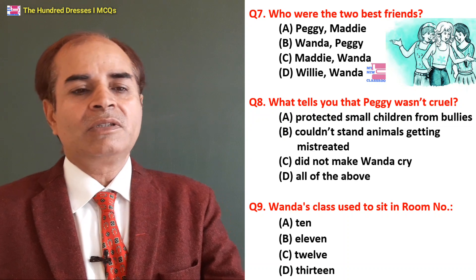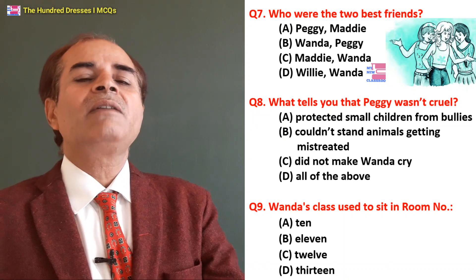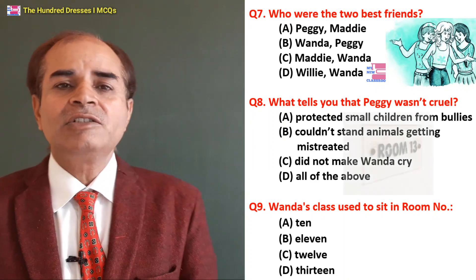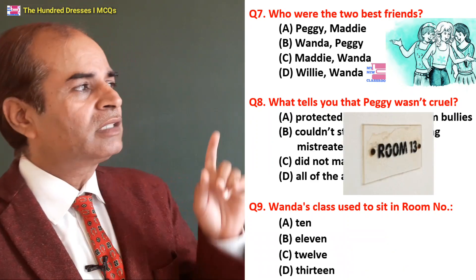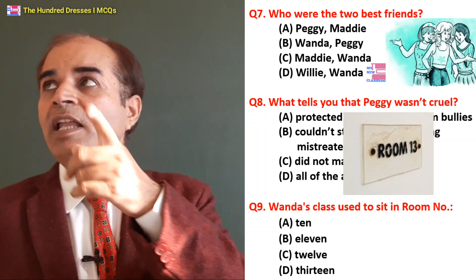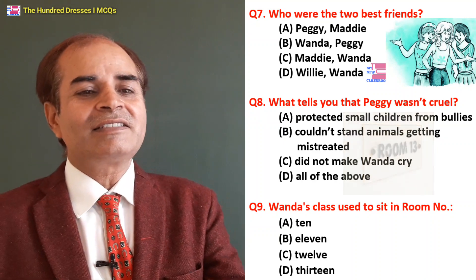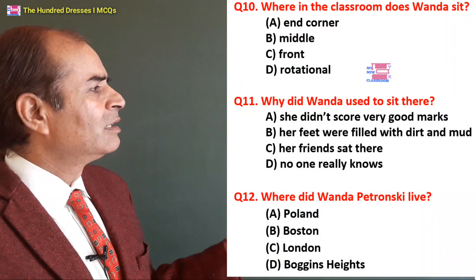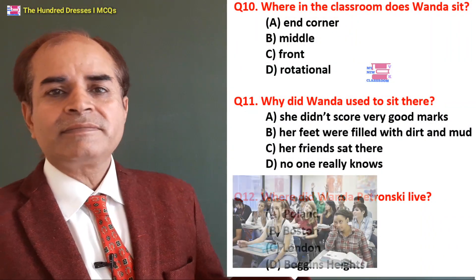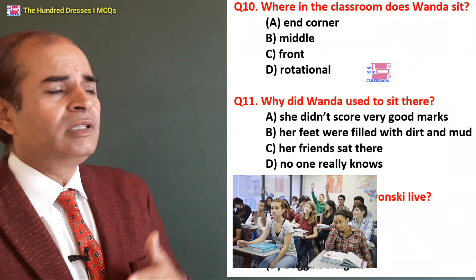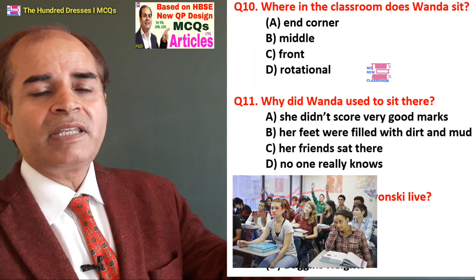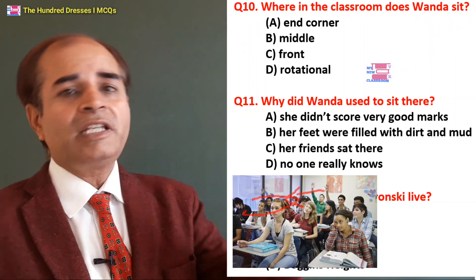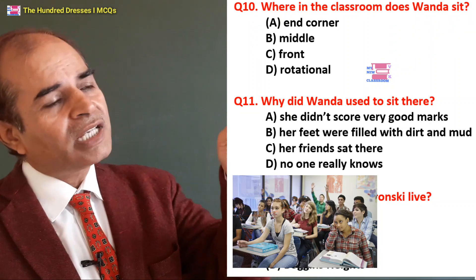Ninth question: When does the class sit in room number — 10, 11, 12, or 13? 13 is the right answer — D is the right answer. Tenth question: Where in the classroom does Wanda sit? At the end corner? In the middle? At the front? Or rotationally? No — she always had one fixed place.